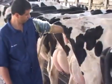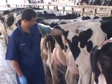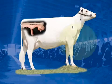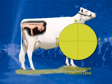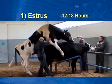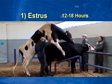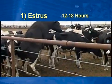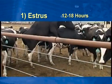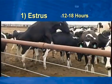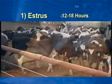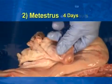The estrus cycle in dairy cattle is between 18 and 24 days, with an average of 21 days. Estrus is the period of 12 to 18 hours in which the cow is receptive to the bull. Met estrus: this stage lasts four days and begins after ovulation with the formation of a CL, or corpus luteum.